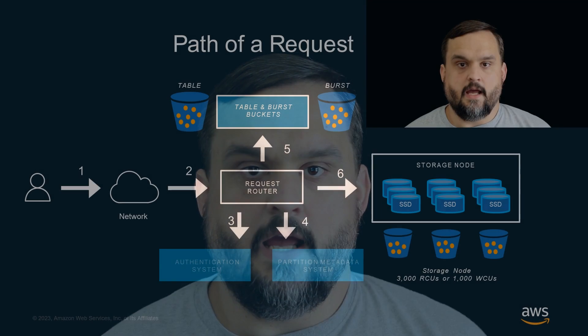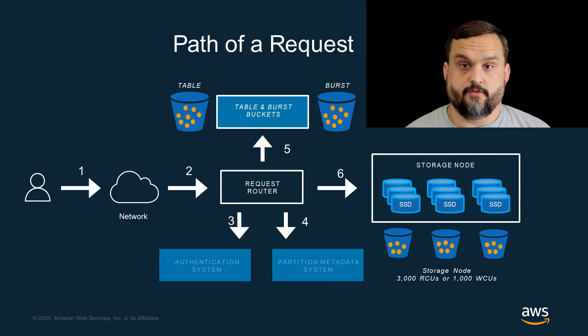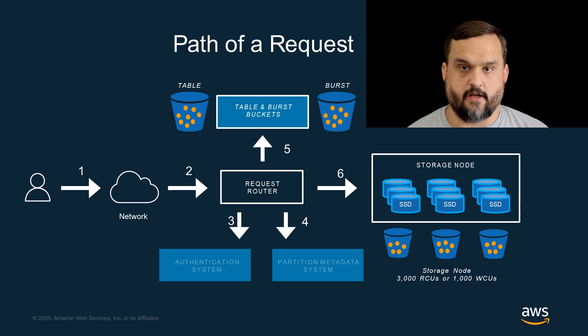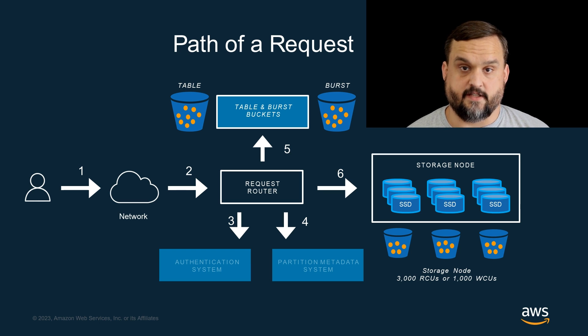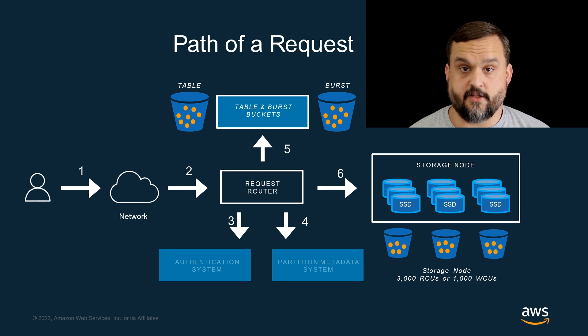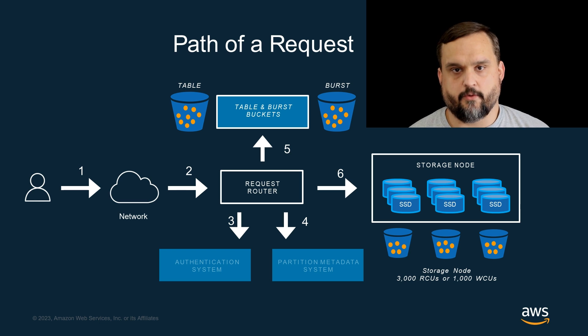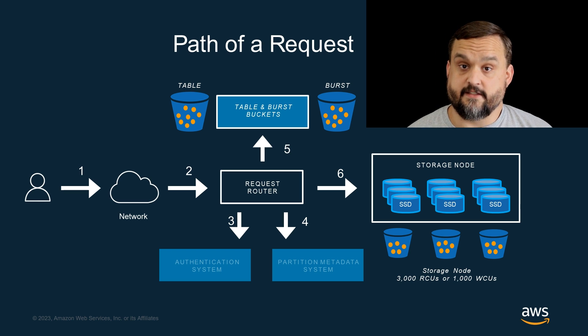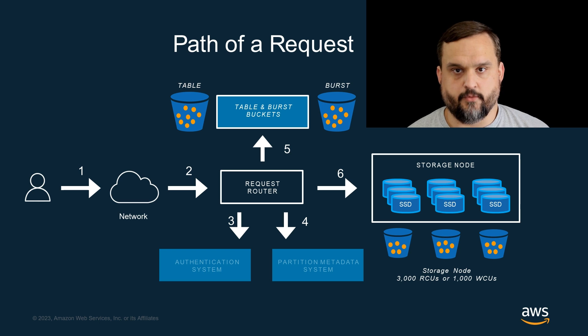With that little bit of background, let's talk about the two places where you could get throttled when you make a request to DynamoDB. As you make a request, it comes into a request router — that's the front-end fleet that does things like get table metadata, handle authentication and authorization, and pass requests on to storage nodes for persistence. Before they route your request to the storage nodes, they'll check the capacity that's available for your whole table. This is the number of read and write capacity units that your table was provisioned with, assuming you're running in provisioned mode. If the table has enough capacity, that request is going to move along the path. If it doesn't, we'll check the burst bucket.